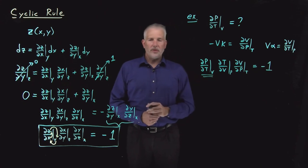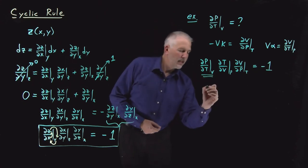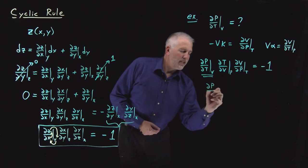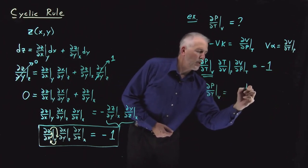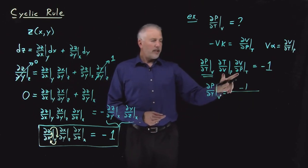This is the one we're interested in, so let's leave that on the left-hand side and write ∂p/∂T at constant V is equal to the negative one that's on the right, divided by these two.